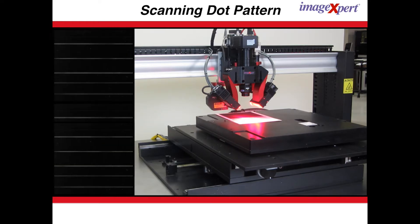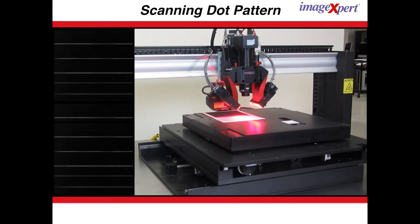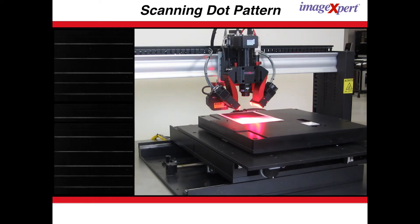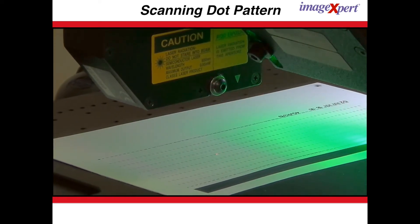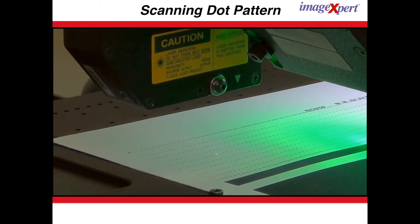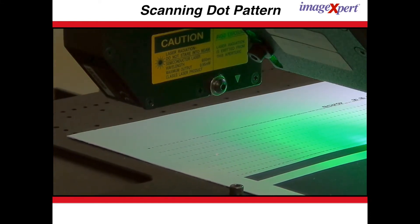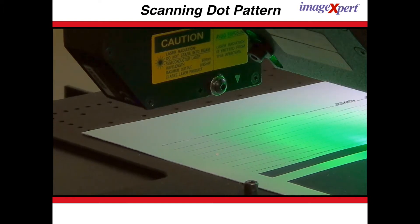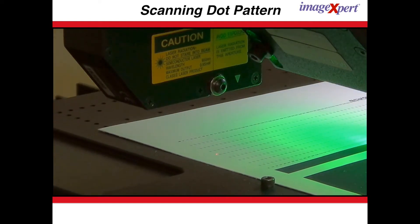With this system, addressing issues such as banding and streaks is faster and easier than ever. The ImageExpert dot positioning analysis system automatically captures and analyzes large printed dot patterns in a single pass. A single image is taken without stitching, increasing the speed and accuracy of scanning.